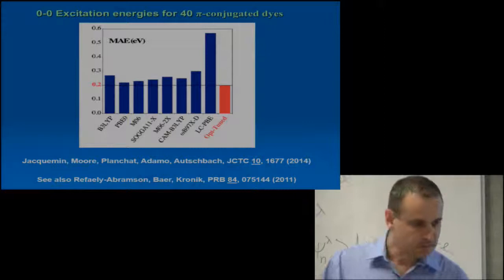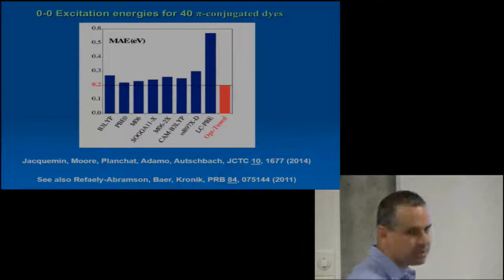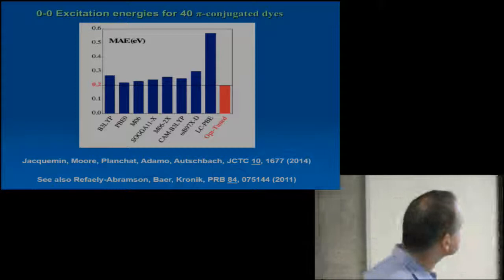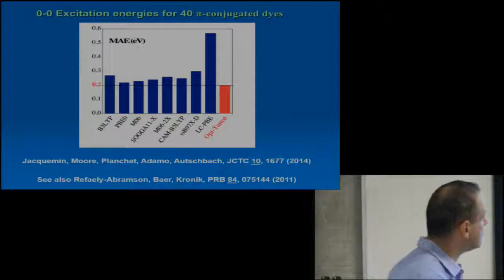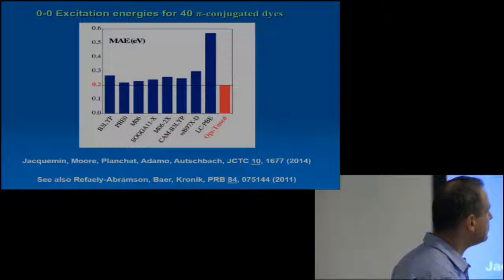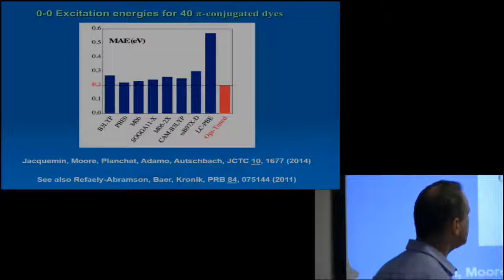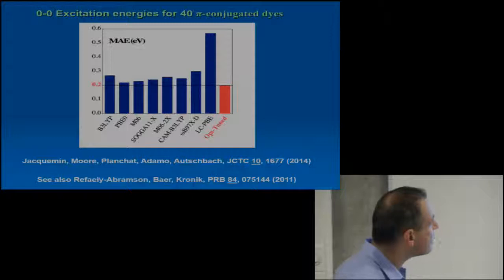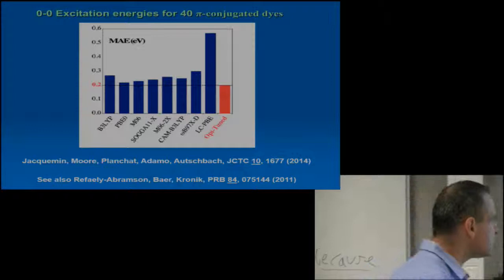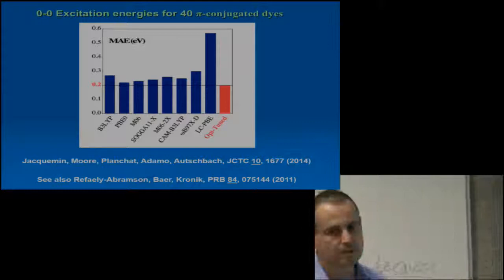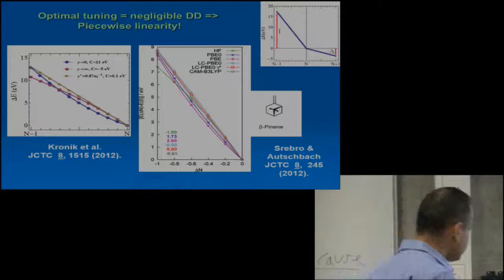Now there's a myth which I would like to dispel, and that is that you gain for charge transfer excitations that way, but then you lose on valence excitations. Here's work from the Autschbach group. They took 40 pi-conjugated dyes, calculated the zero-zero excitation energies, compared them to benchmark data. If you're using untuned range-separated hybrids, then yes, it's somewhat worse. But if you tune it, you're actually not only doing as well as B3LYP or PBE0, but in fact just a tad better. So this does not come with the cost of valence excitations.